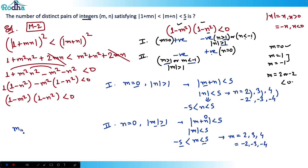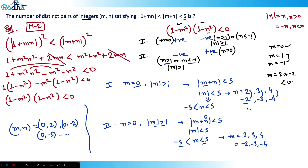So counting the solutions: in Case 1 with m = 0, n takes 6 values giving 6 ordered pairs. In Case 2 with n = 0, m takes 6 values giving 6 ordered pairs. Total: 6 + 6 = 12 is the answer.